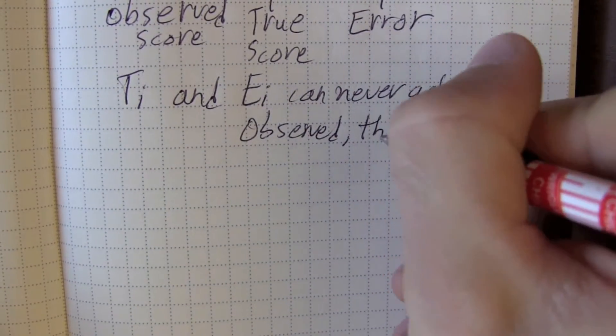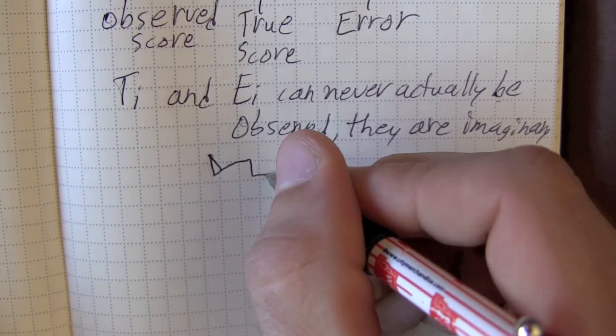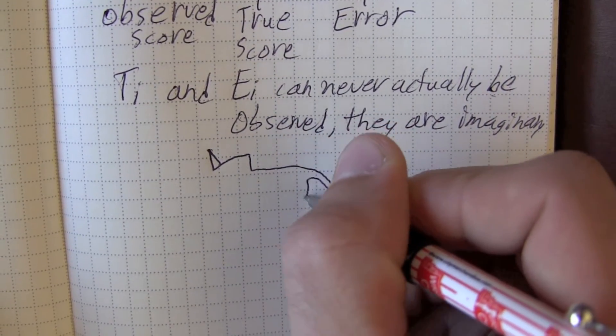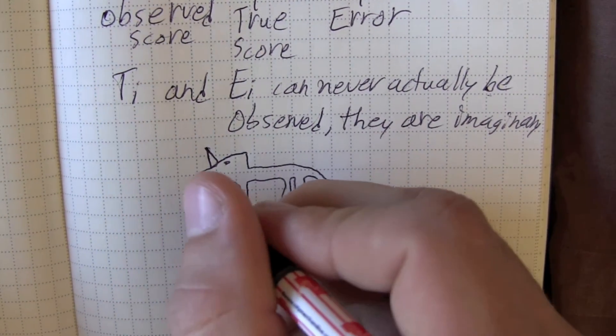True scores and error are also imaginary in the sense that the idea for this video is imaginary. It's imaginary until I write it down, until you materialize. It can still be real like unicorns, but it isn't physically real.